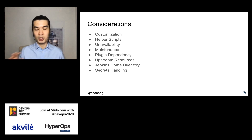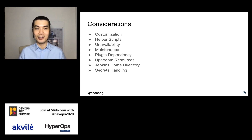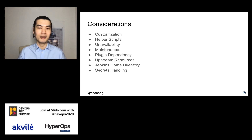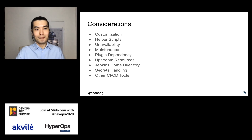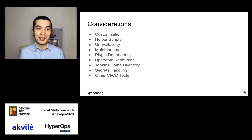Regarding secrets handling: I was using a secrets.env file with plain text secrets — that's not ideal. We must improve secrets handling; consider services like HashiCorp Vault to handle secrets in a more secure way. And last but not least — perhaps you don't need Jenkins at all. Other CI/CD tools might be more efficient for your needs, such as CircleCI or Azure DevOps. There are many alternatives out there, so give them consideration too.